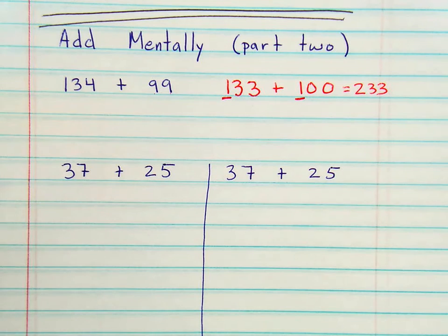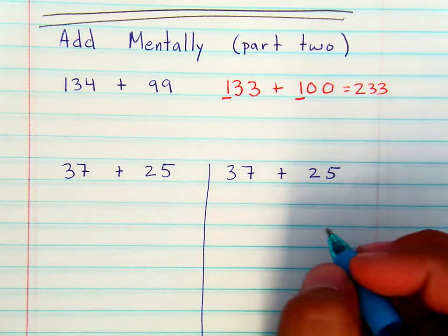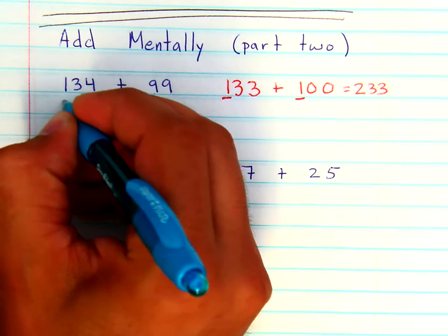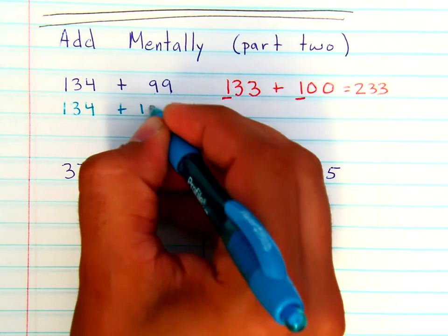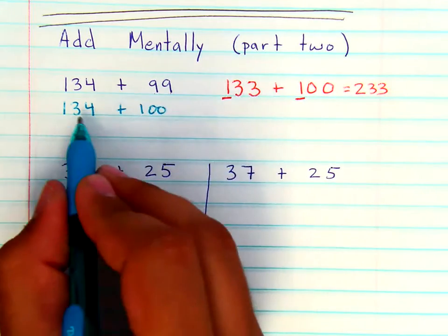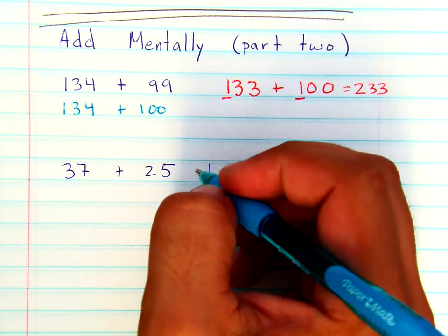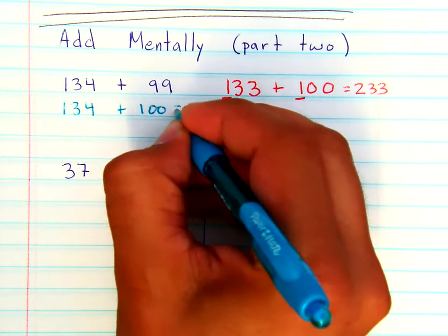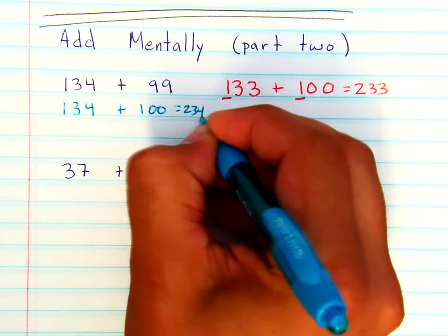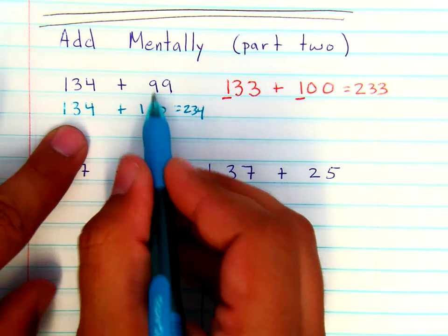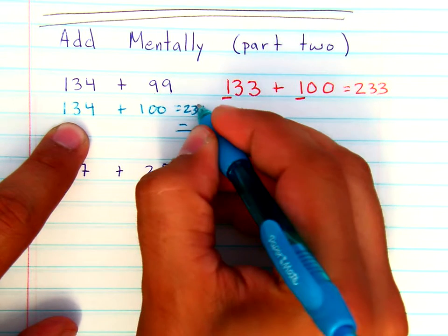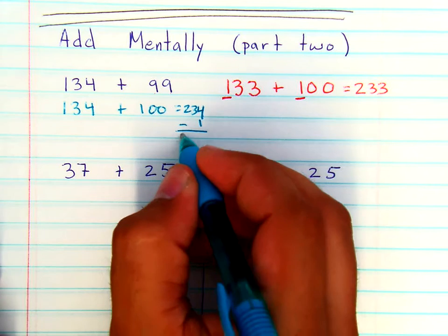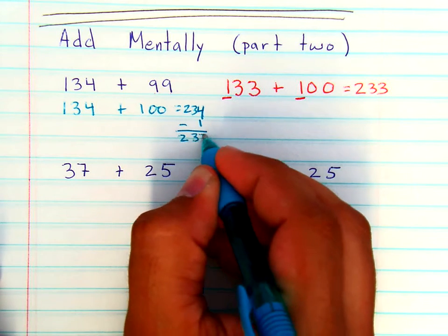Now another way that I have kids think of this is if you take 134 and you add 100, that's 234. Since you've added one, you just take that 1 off the top of 234 and you end up with 233.